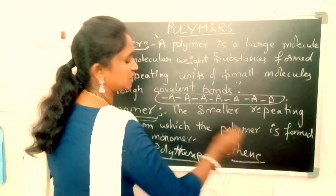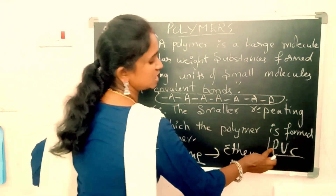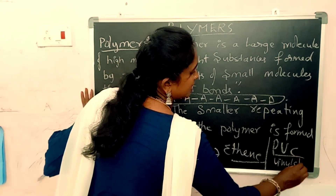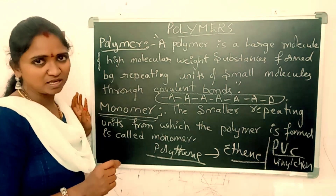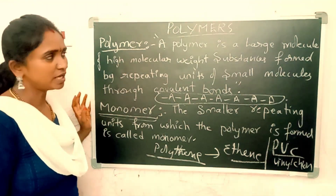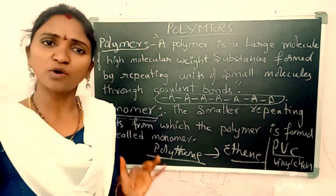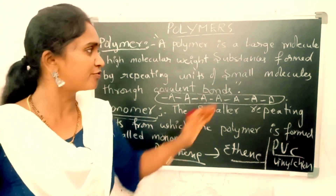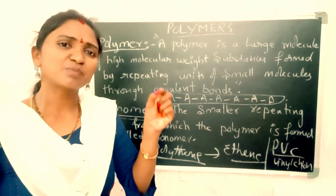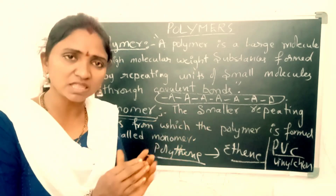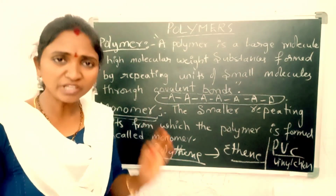So PVC — polyvinyl chloride — is a polymer, and vinyl chloride is the monomer. To summarize: a polymer is a large molecule of high molecular weight formed by repeating units of smaller molecules through covalent bonds. The smaller repeating unit from which the polymer is formed is called a monomer.